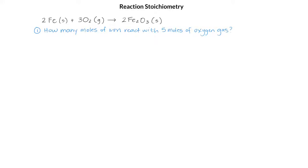Let's calculate how many moles of iron react with 5 moles of oxygen gas. We do this using our reaction stoichiometry and dimensional analysis. We have 5 moles of O₂, and we want to multiply by a unit factor that will cancel out the moles of oxygen and give us the moles of iron. The unit factor is going to be the mole ratio according to the balanced chemical equation.